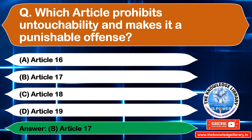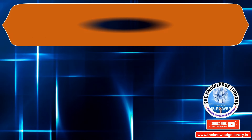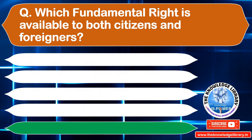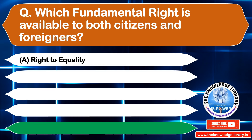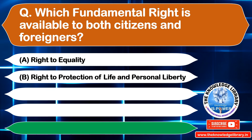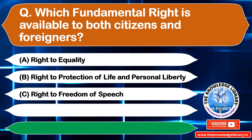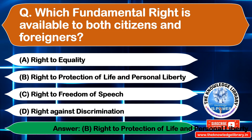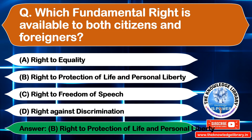The next question is: which fundamental right is available to both citizens and foreigners? Option A: Right to Equality, Option B: Right to Protection of Life and Personal Liberty, Option C: Right to Freedom of Speech, Option D: Right Against Discrimination. The correct answer is Option B: Right to Protection of Life and Personal Liberty.